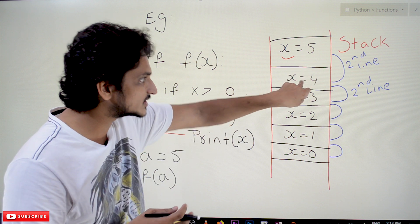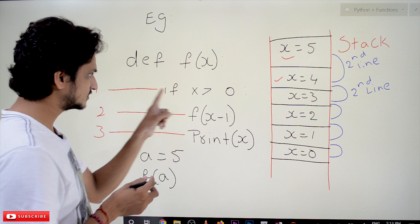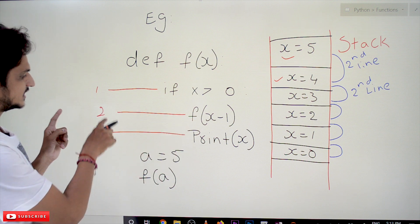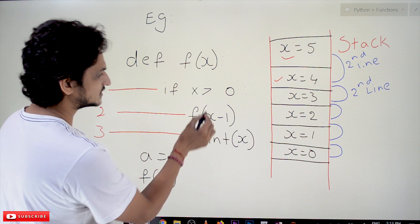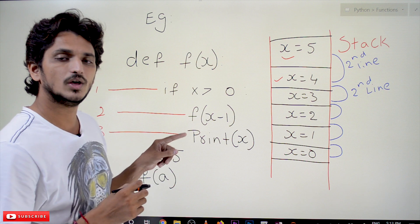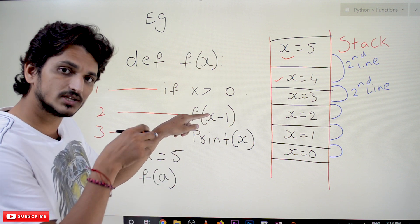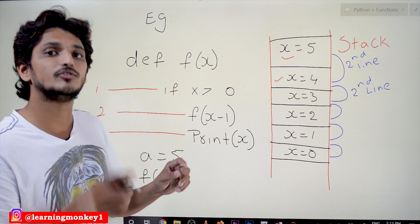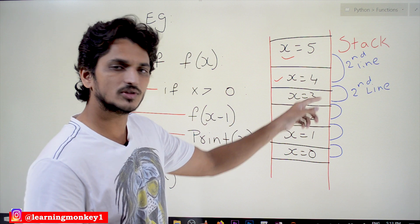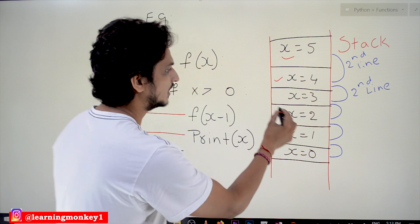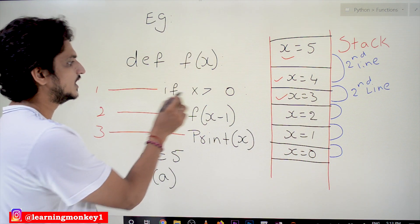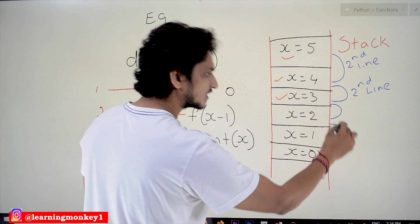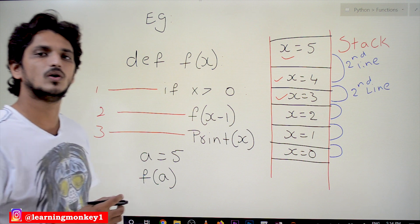This new function starts executing. It checks the condition: 4 greater than 0 — yes. It goes inside and executes the second line, calling the function again with x minus 1, which is 3. Again, this function calls another function with x equal to 3. That function calls x equal to 2, then x equal to 1, then x equal to 0 — it continues like that.